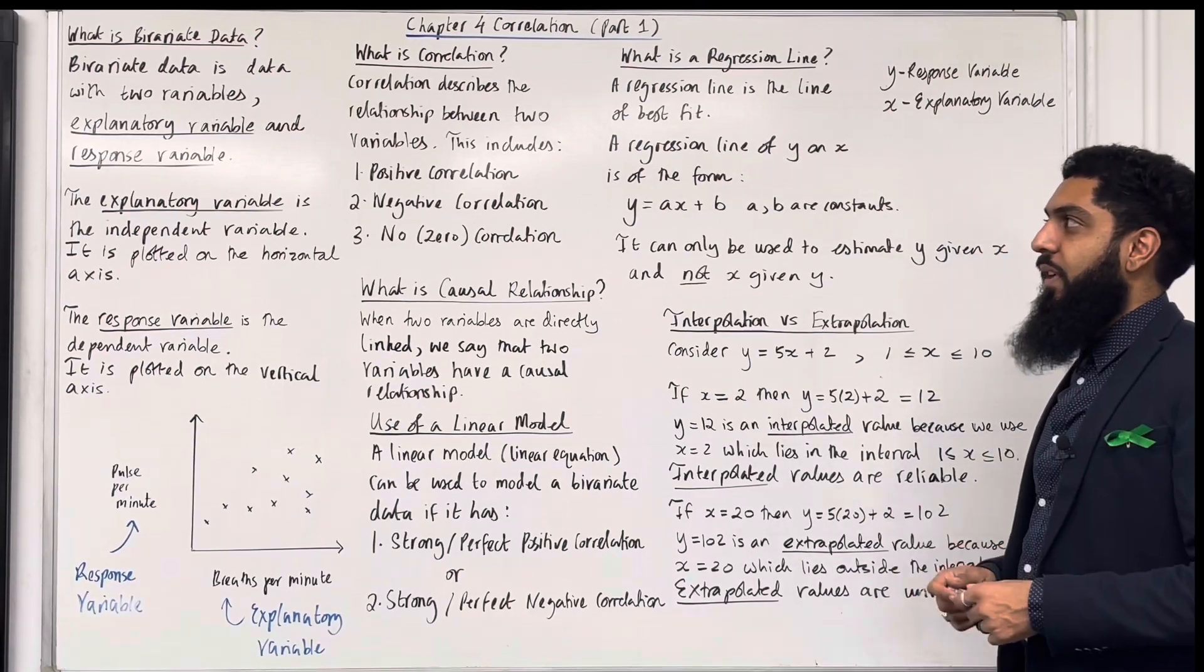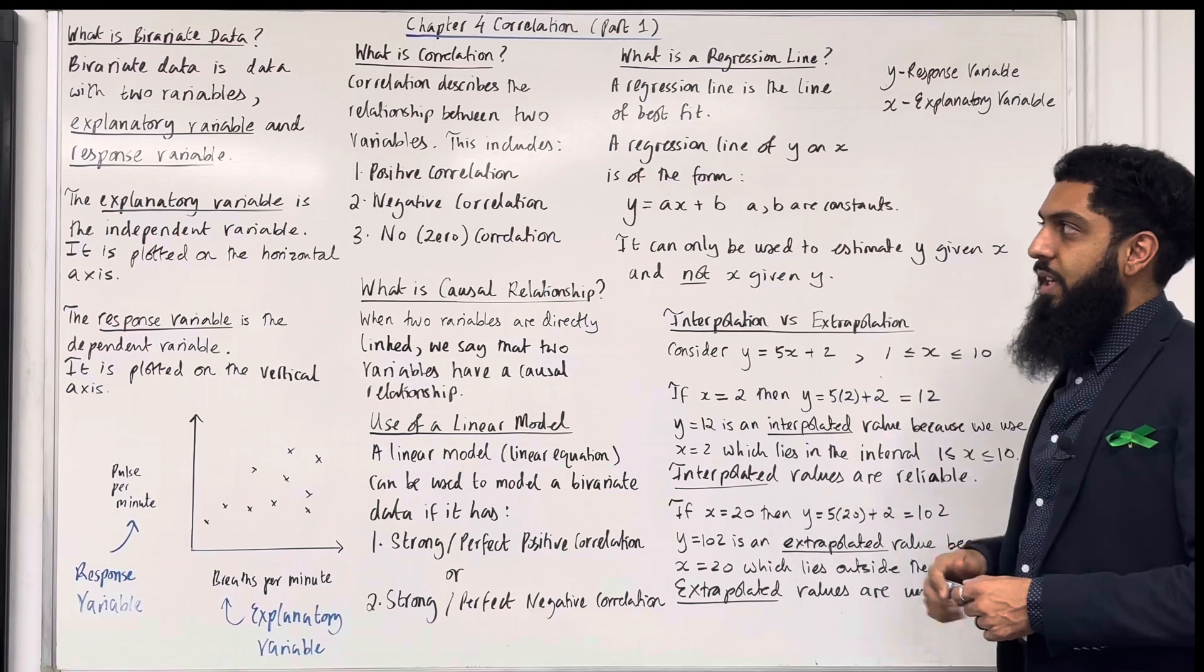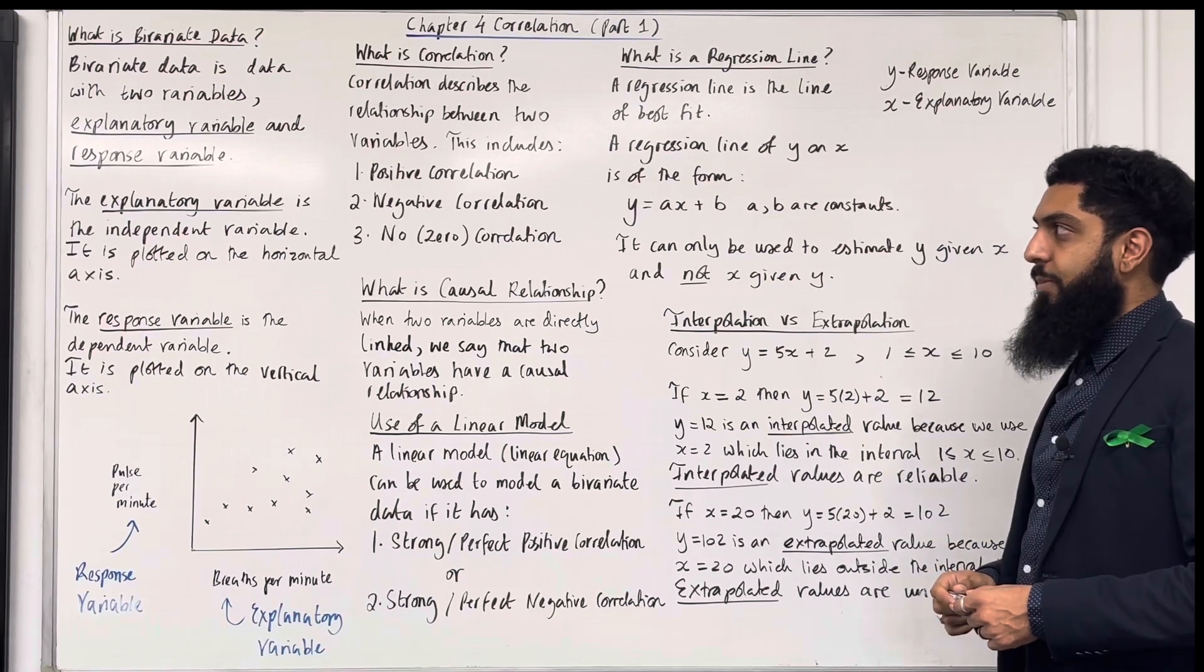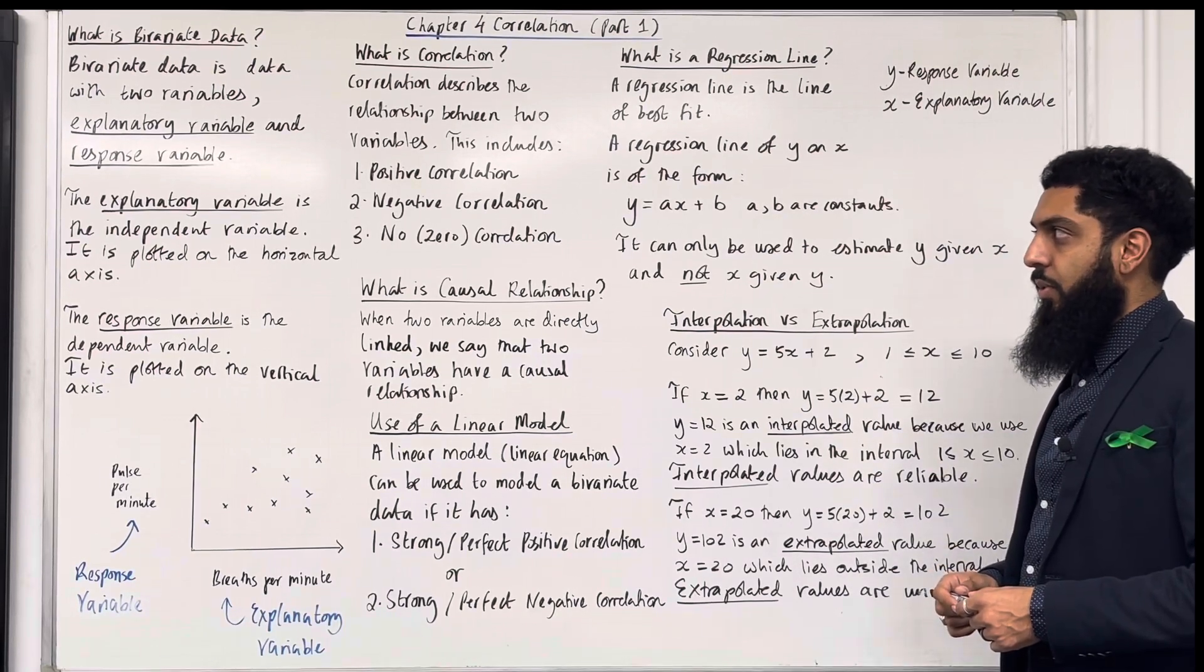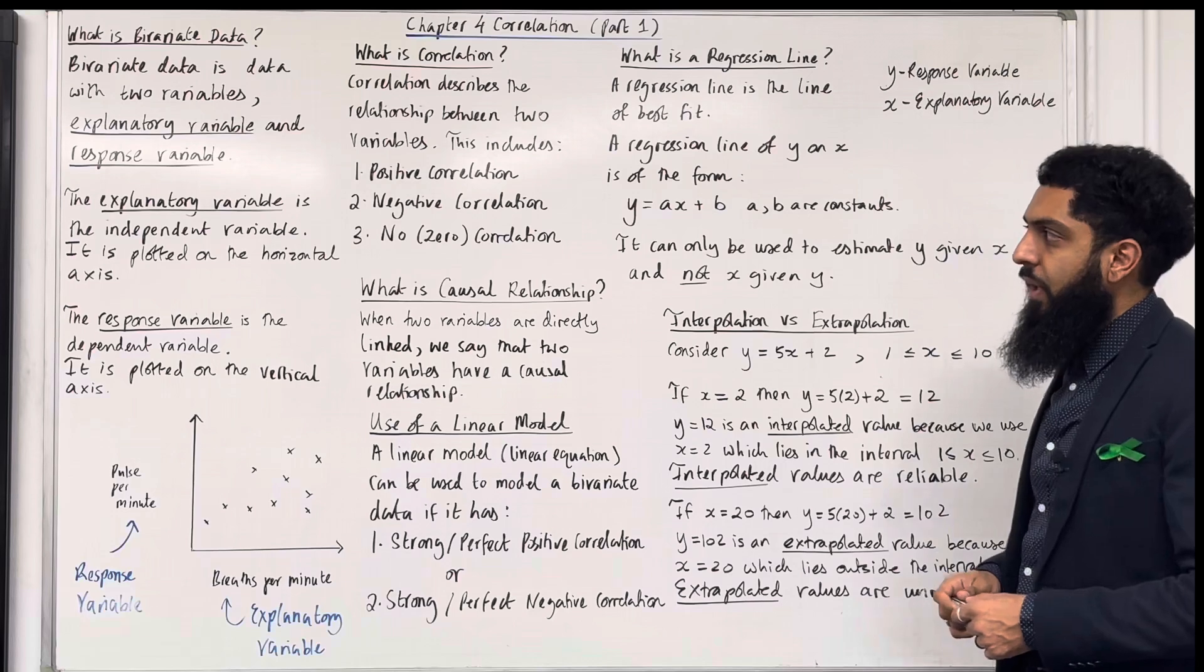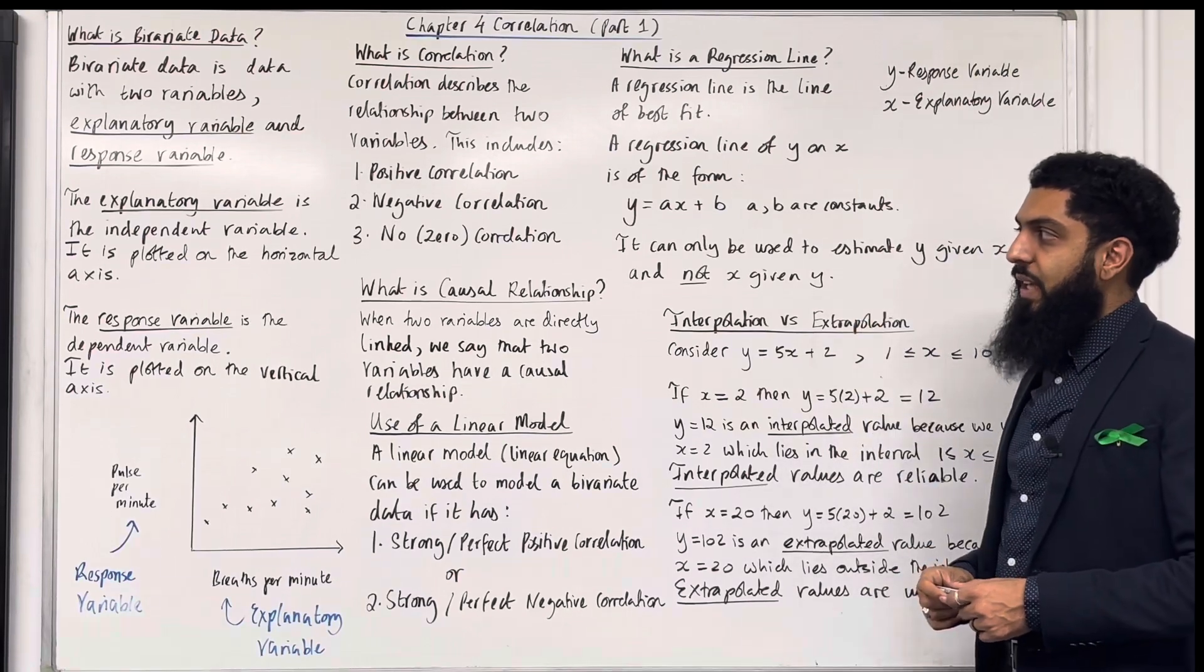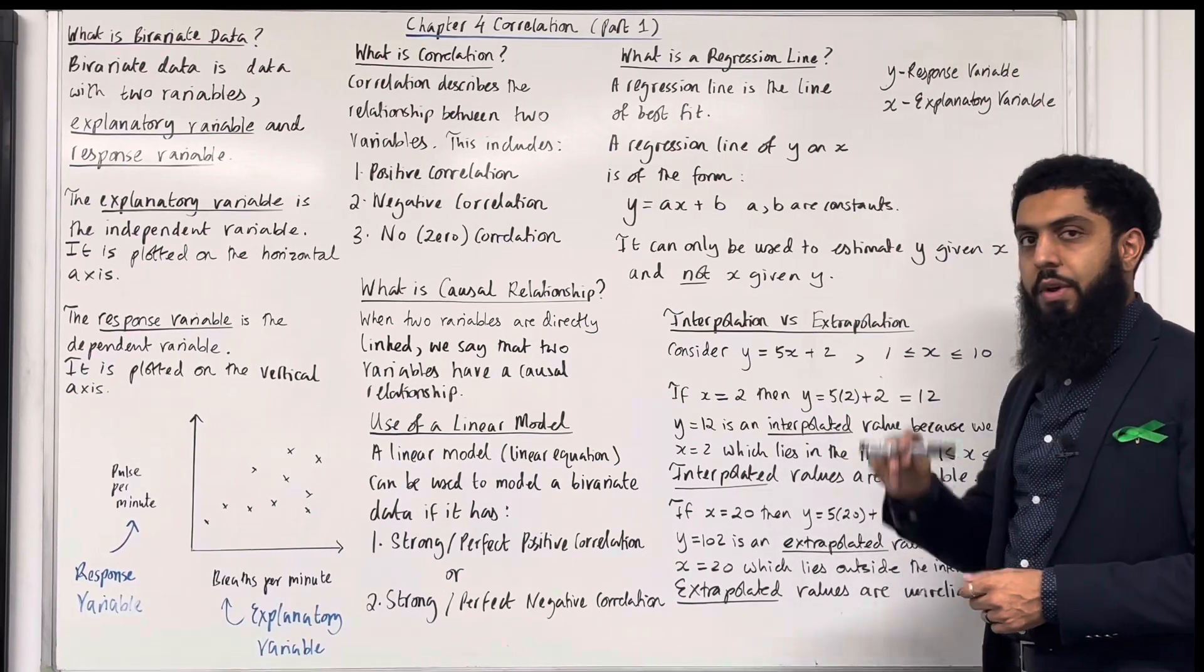Ladies and gents, what is bivariate data? Bivariate data is data with two variables, explanatory variable and response variable. They are two key words. The explanatory variable is the independent variable. It is plotted on the horizontal axis.